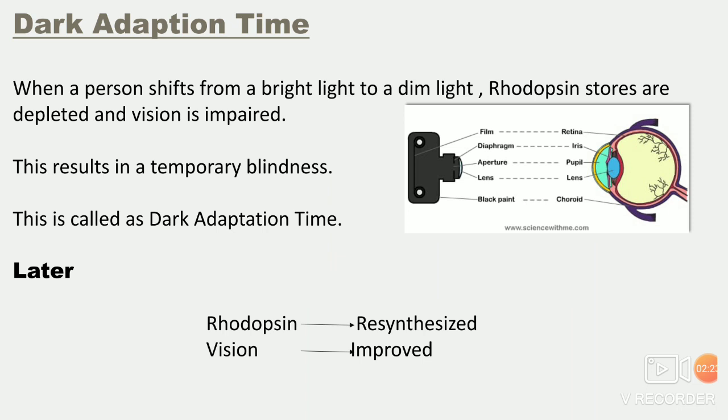Then we see the term dark adaptation time. Dark adaptation time क्या है: when a person shifts from bright light to dim light, rhodopsin stores are depleted and vision is impaired. जब कोई भी person bright light से dim light में shift होता है तो उसको temporary blindness होती है, और इसीलिए इसका नाम है dark adaptation time.